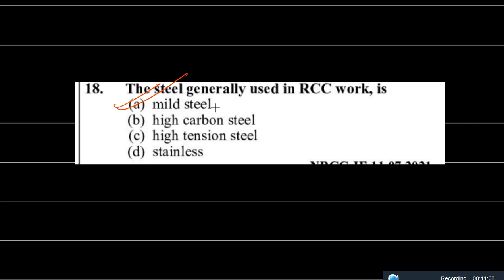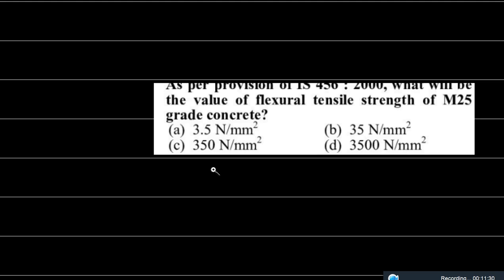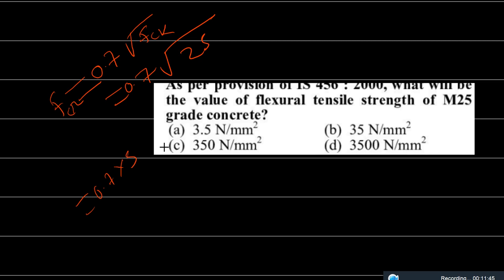The next question: as per IS-456-2000, what is the value of tensile strength for M25 concrete? The formula for tensile strength is 0.7√fck. For M25, fck = 25, so √25 = 5, and 0.7 × 5 = 3.5 N/mm². The correct answer is option A: 3.5 N/mm².